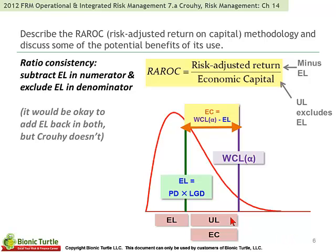And then we have the purple line, which Crowley calls worst case loss — this is really our absolute VAR concept, or if we want to include the drift. Notice it uses alpha to connote either the confidence level or, more likely, the significance level.